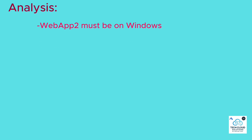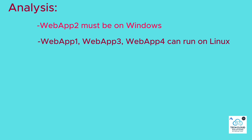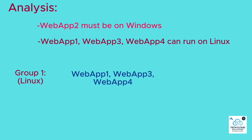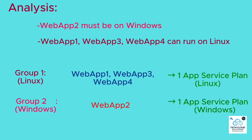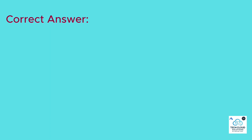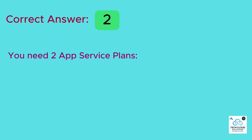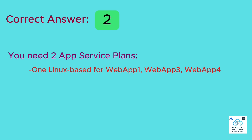Web App 2 must be on Windows. Web App 1, Web App 3, and Web App 4 can run on Linux. So: Group 1 — Linux: Web App 1, Web App 3, Web App 4 — one app service plan (Linux). Group 2 — Windows: Web App 2 — one app service plan (Windows). Correct answer: 2. You need two app service plans — one Linux-based for Web Apps 1, 3, and 4, and one Windows-based for Web App 2.